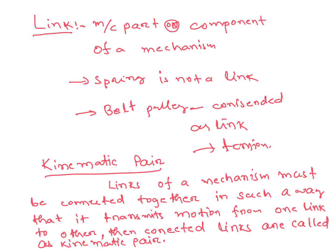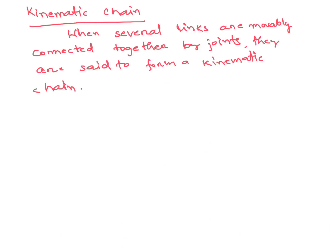In case of compression, a spring is not considered as a link. A kinematic pair is formed when links of a mechanism are connected together in such a way that one transmits motion to another. When several links are movably connected together by joints, they form a kinematic chain, which may be open or closed.